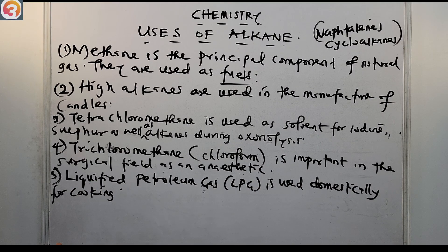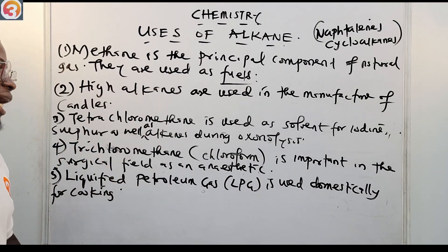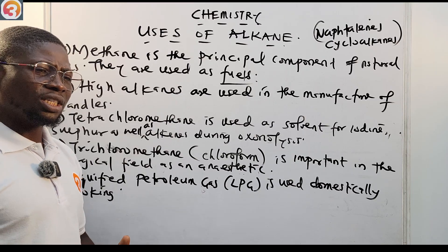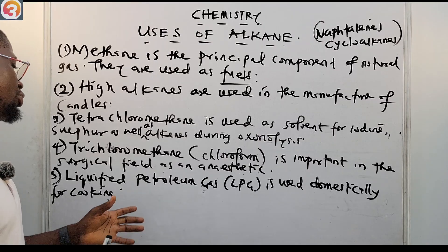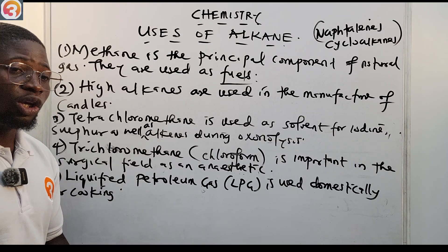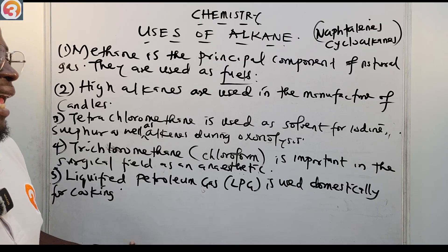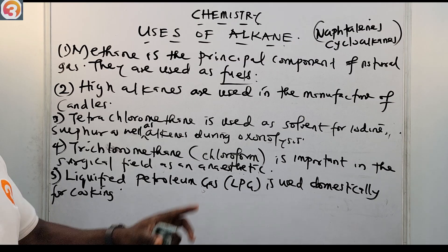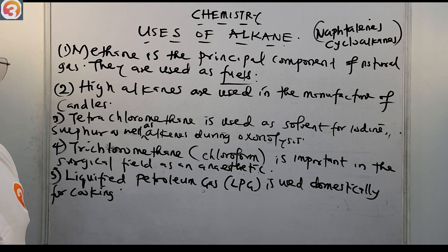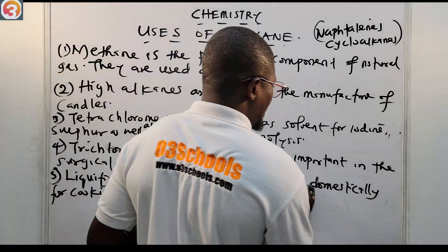To summarize all uses of alkanes: (1) Methane is the principal component of natural gas and, because alkanes undergo combustion releasing a lot of heat, they are used as fuels. (2) High alkanes are used in the manufacture of candles. (3) Tetrachloromethane (CCl4) is used as a solvent for iodine, sulfur, and alkenes during ozonolysis. (4) Trichloromethane (chloroform) is used in the surgical field as an anesthetic. (5) LPG is used domestically for cooking. (6) Naphthenes and cycloalkanes are used as fuels.